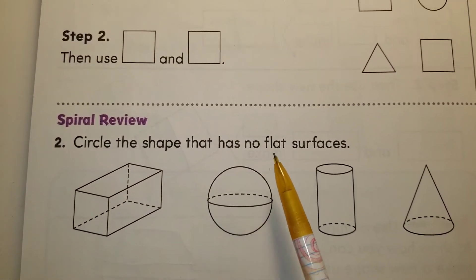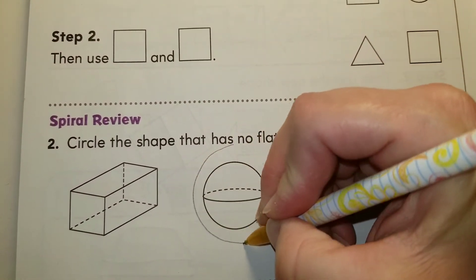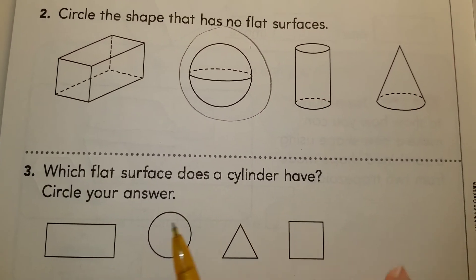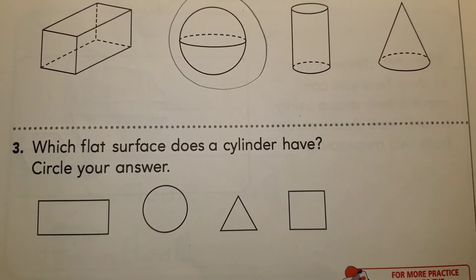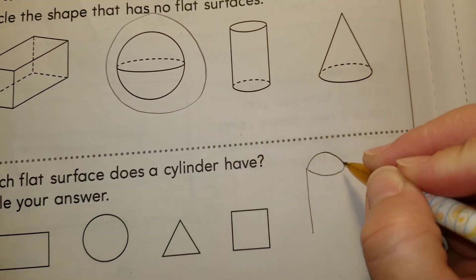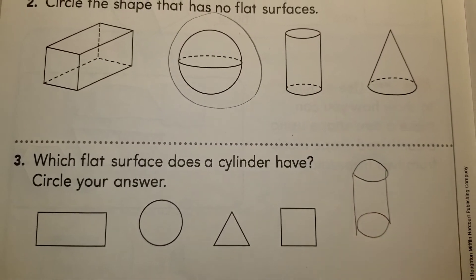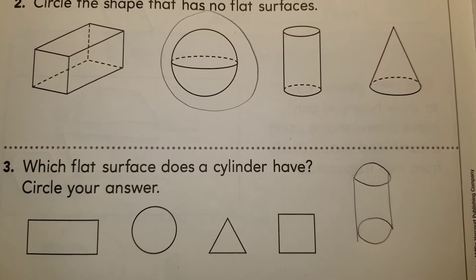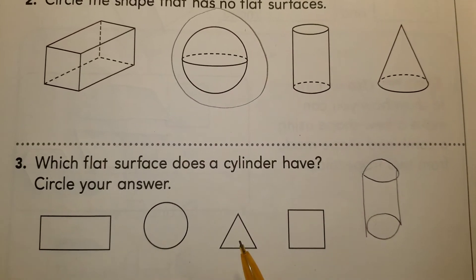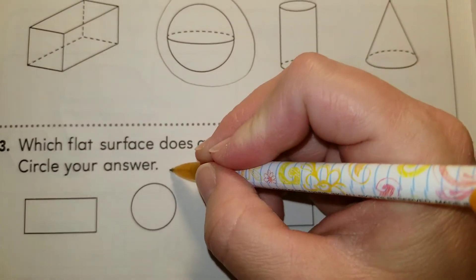Circle the shape that has no flat surfaces — which one is the only curved shape? The sphere. And then number three: which flat surface does a cylinder have? A cylinder looks like a can. What is the flat surface on the cylinder? It's the top and the bottom. How does the top and bottom look? Do they look like a rectangle, a circle, a triangle, or a square? Both of the flat surfaces on the cylinder look like a circle.